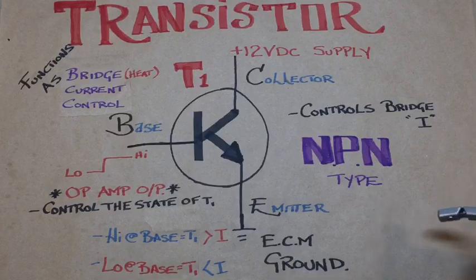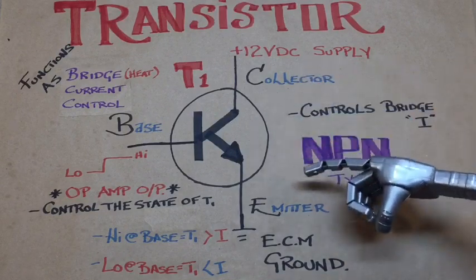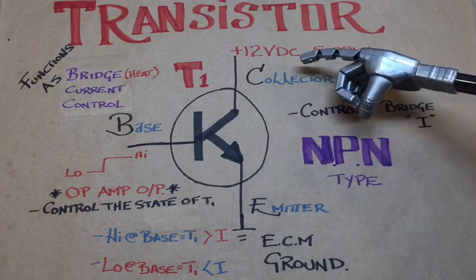The transistor in the circuit, semi-conductor device, consisting of three elements. We go with the collector, the emitter, and the base.